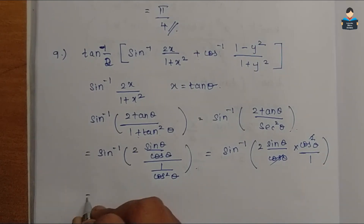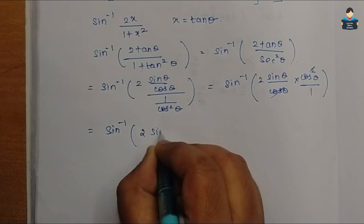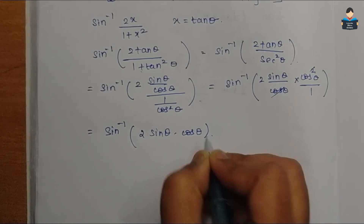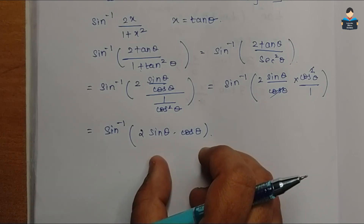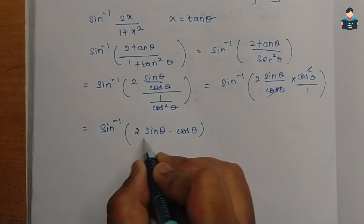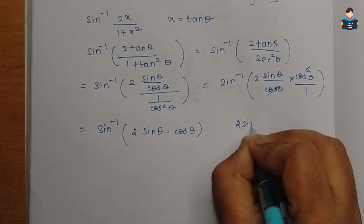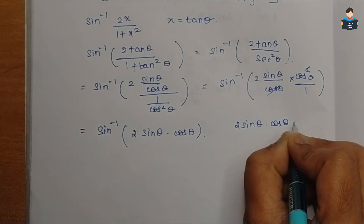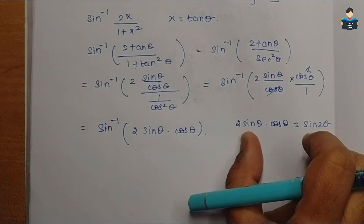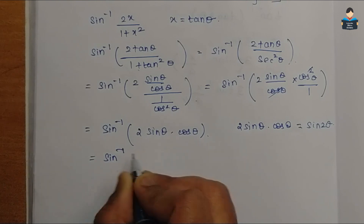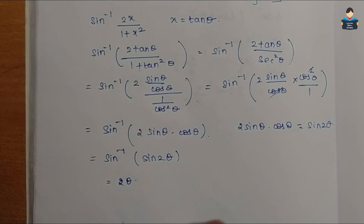We get sin inverse of (2 sin θ by cos θ) divided by (1 by cos square θ), which simplifies to sin inverse of 2 sin θ by cos θ into cos square θ. This gives sin inverse of 2 sin θ cos θ, which equals sin inverse of sin 2θ, and therefore equals 2θ.